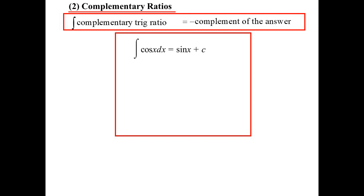What do I mean by that? Well remember, we know cosine gives us sine. Now the complementary ratio to cosine is sine. But when we integrate sine, we get negative cosine. So we get negative the complement of the answer.